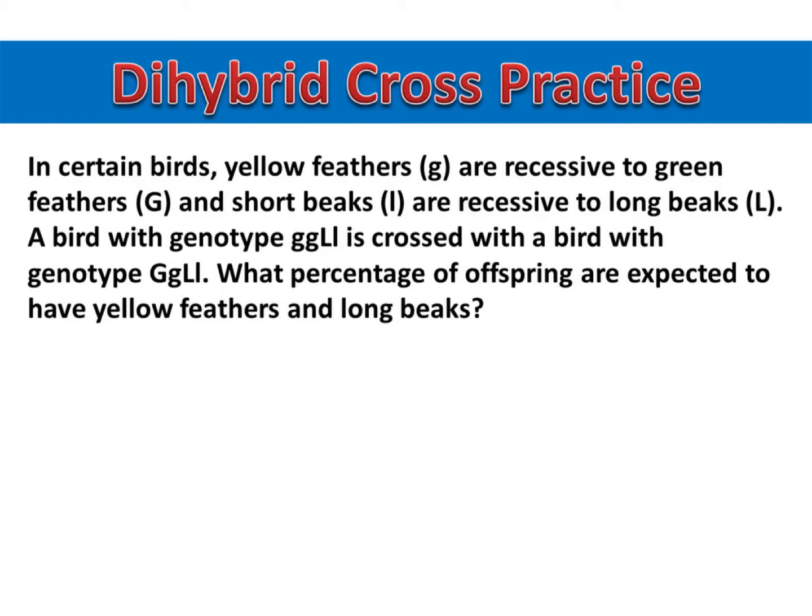In certain birds, yellow feathers (little g) are recessive to green feathers (big G), and short beaks (little l) are recessive to long beaks (big L).